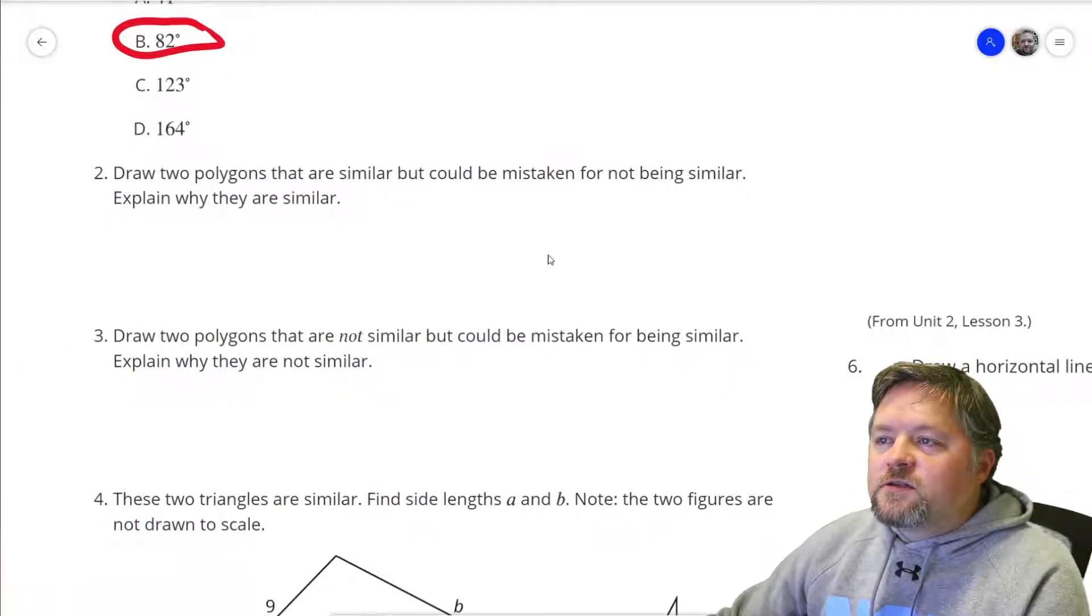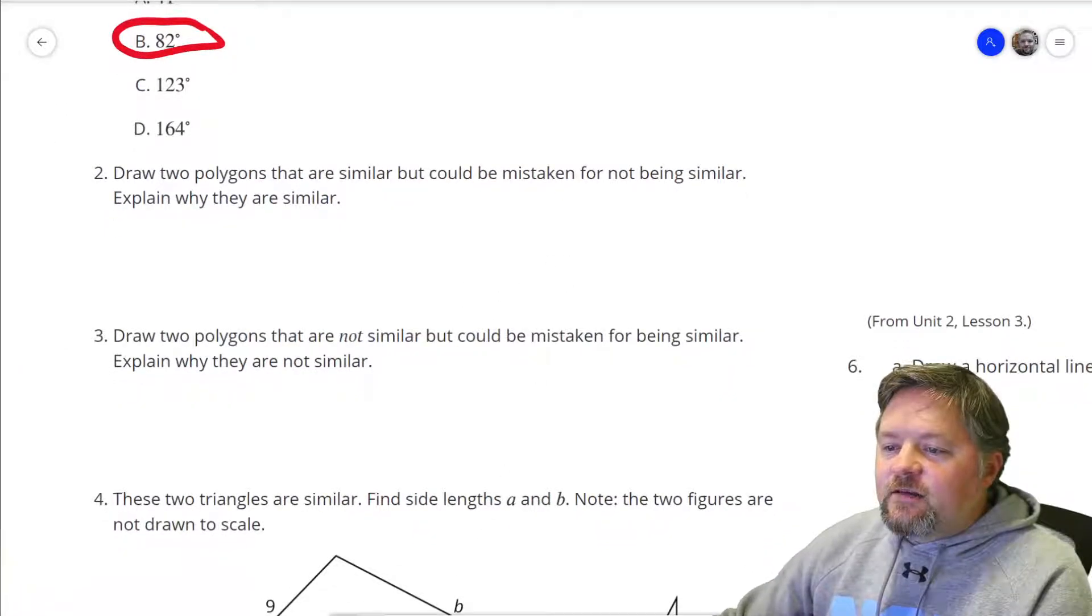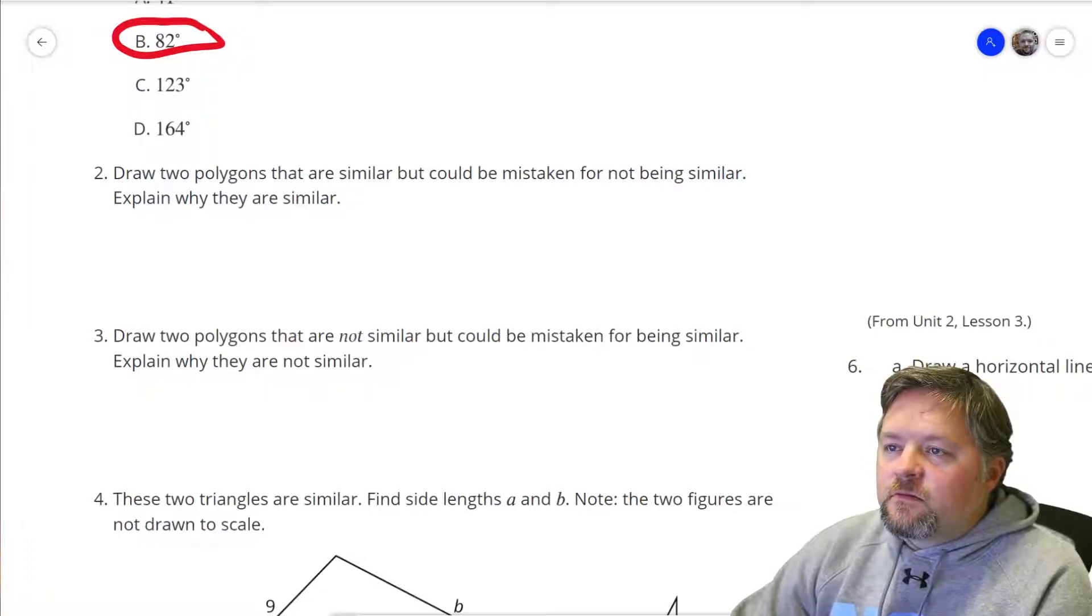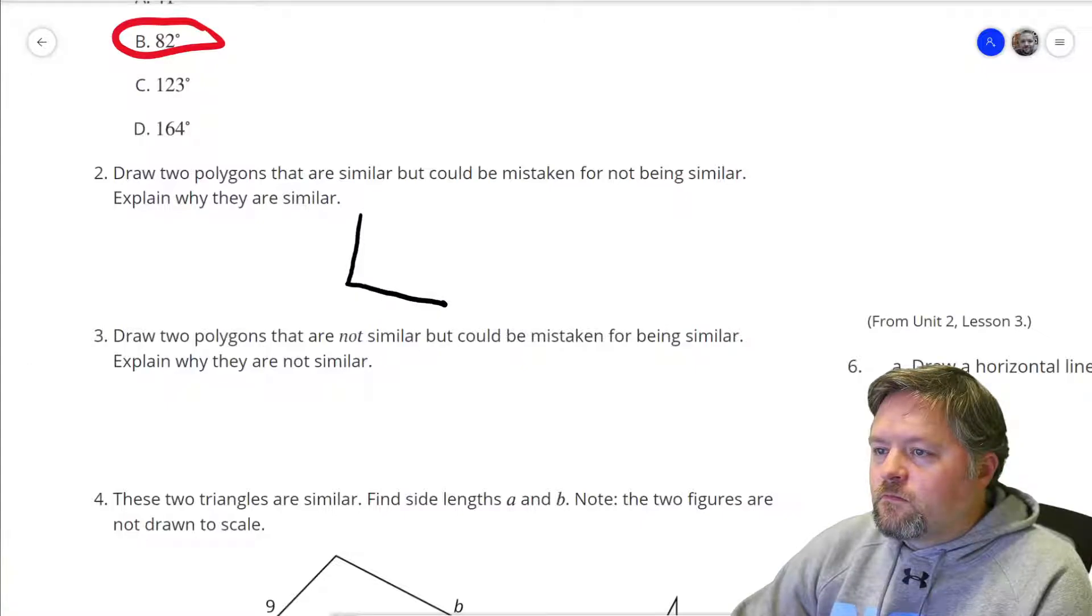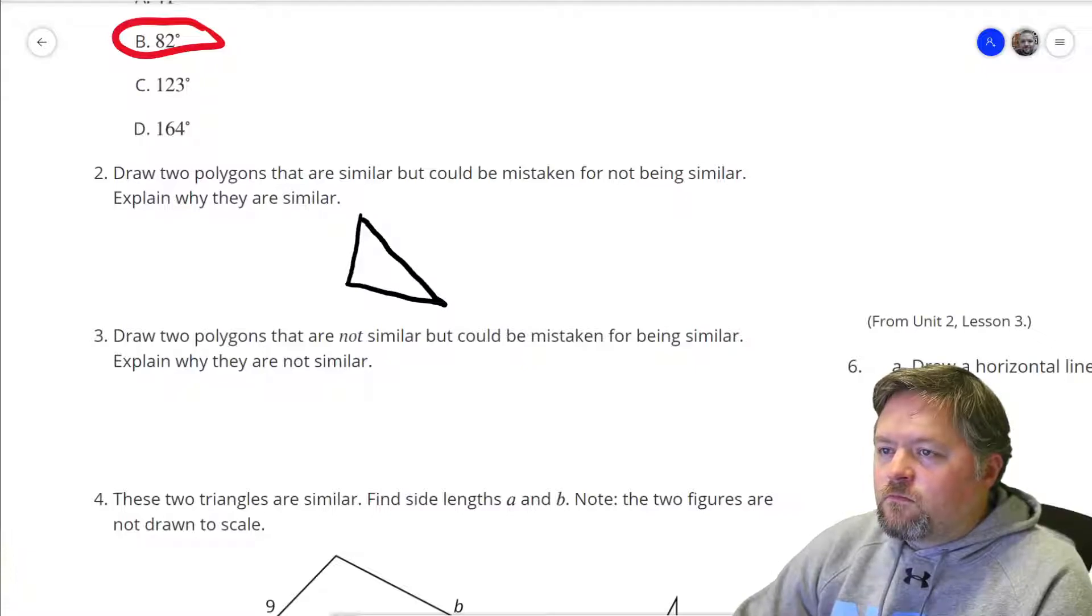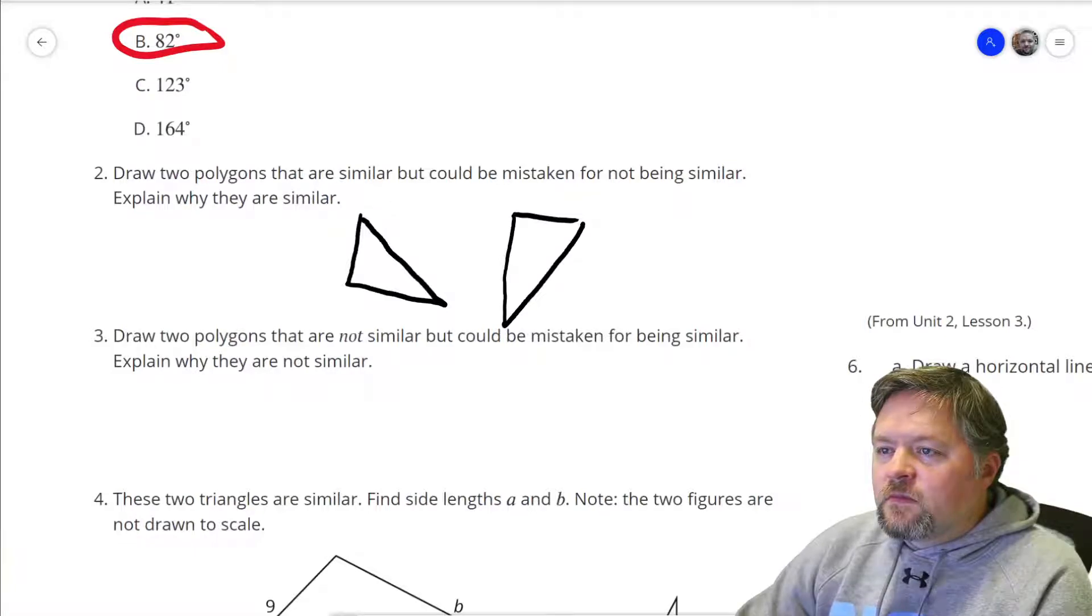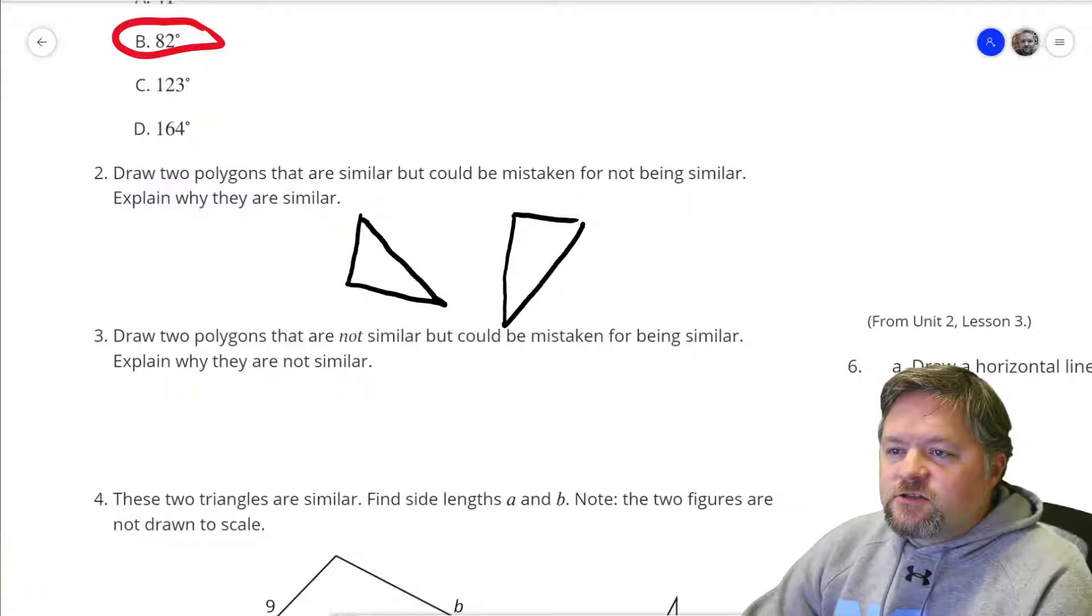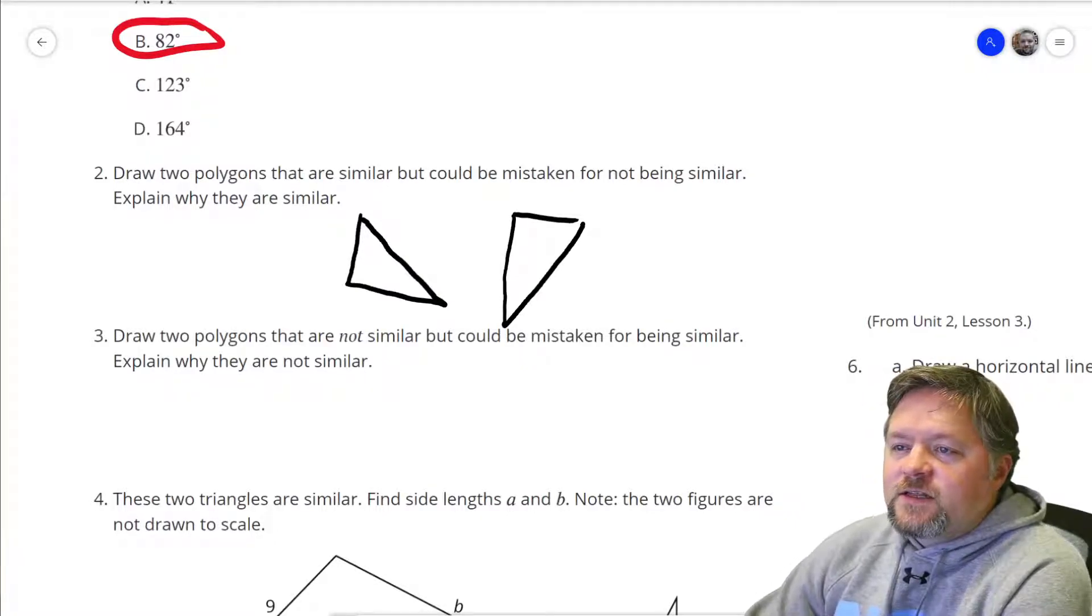Draw two polygons that are similar, but could be mistaken for not being similar. There's a triangle. They're similar, but could be mistaken for not being similar because they're rotated so they don't look quite the same.